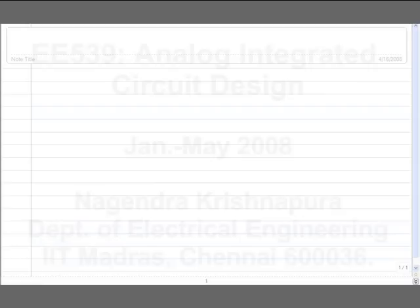What we discussed yesterday was fully differential circuits, and we decided that they need common mode feedback. This is for correct biasing. We have some current source at the bottom of the differential pair, and the current sources at the top should sum to this current value. For that we need common mode feedback, basically to establish the output quiescent operating points.